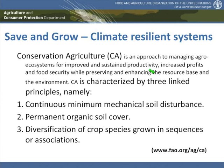Starting with the definition — we all know more or less what conservation agriculture is, and within this webinar you have been exposed to its definition. The important part is that conservation agriculture is based on three principles, three pillars. The first is continuous minimum mechanical soil disturbance. I highlight this because we talk about minimum soil disturbance, not minimum tillage. Tillage is an intervention where we try to structure and alter the soil with mechanical means.